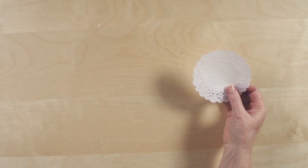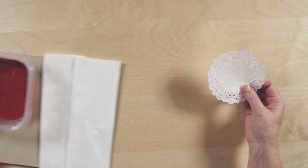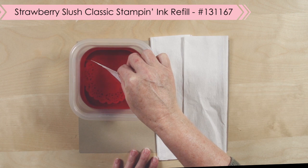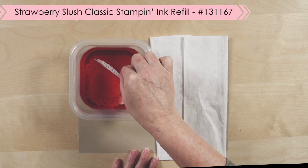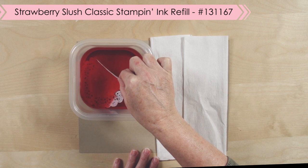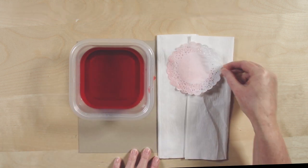All you have to do is take a little bit of water, add a few drops of reinker to it, and then dip the doily in. Depending on how long you leave it in is how dark the color will become, and then just lay it on some paper towels to dry.